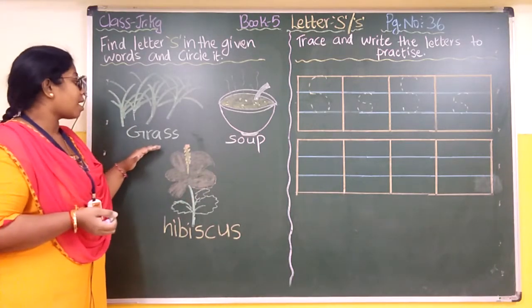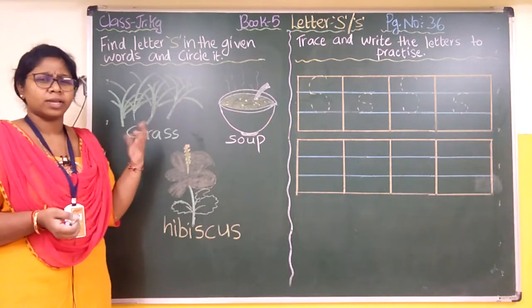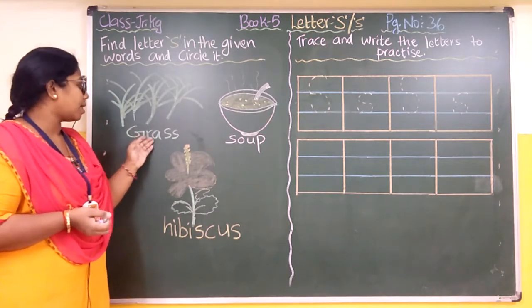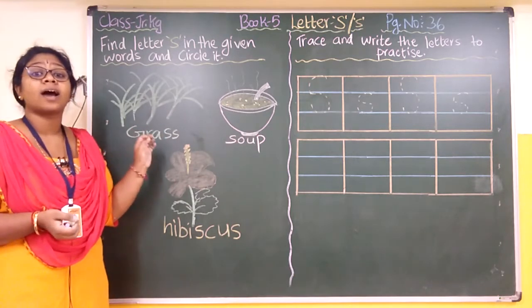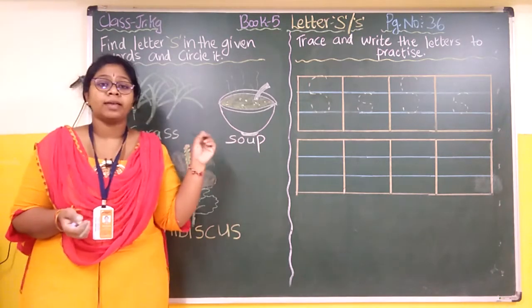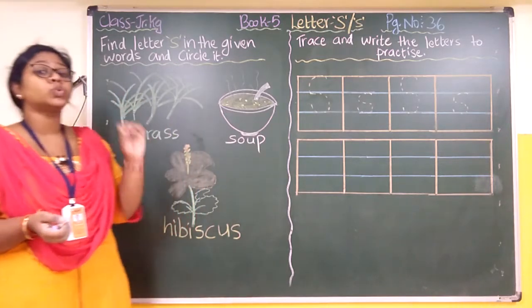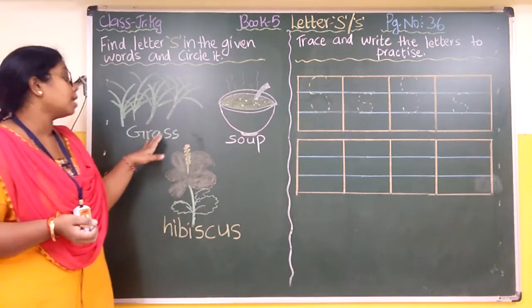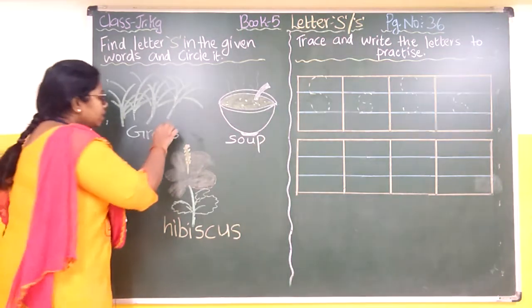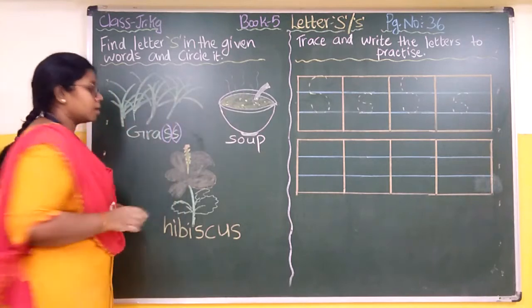The first word is grass. G-R-A-S-S, grass. So how many times is S repeating? It's repeating twice. There are 2 S's in grass. So we will make a circle on both of them.